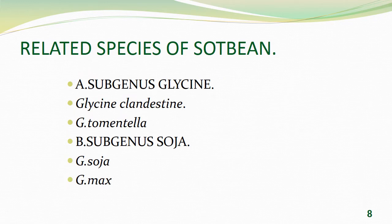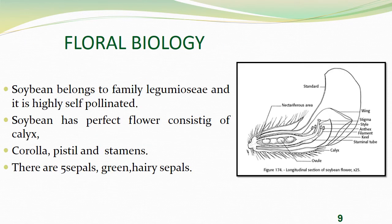Related species: there are two subgenera. Subgenus Glycine consists of Glycine clandestina and Glycine tomentella. Subgenus Soja consists of Glycine soja and Glycine max.